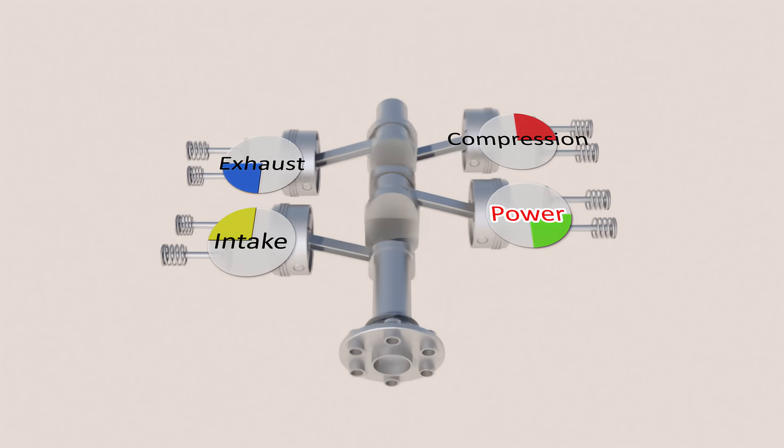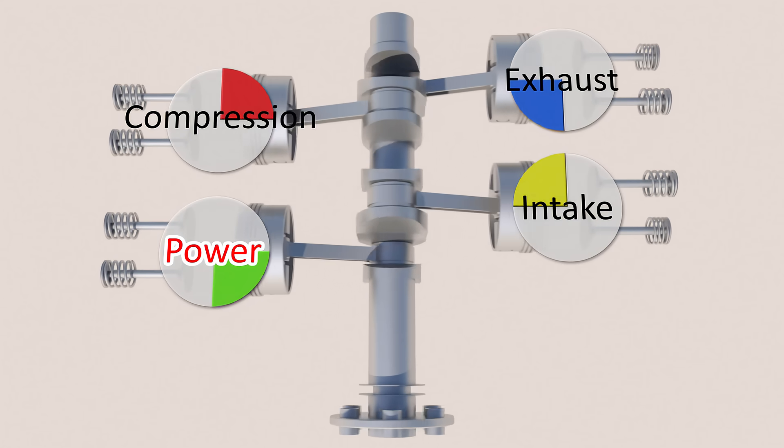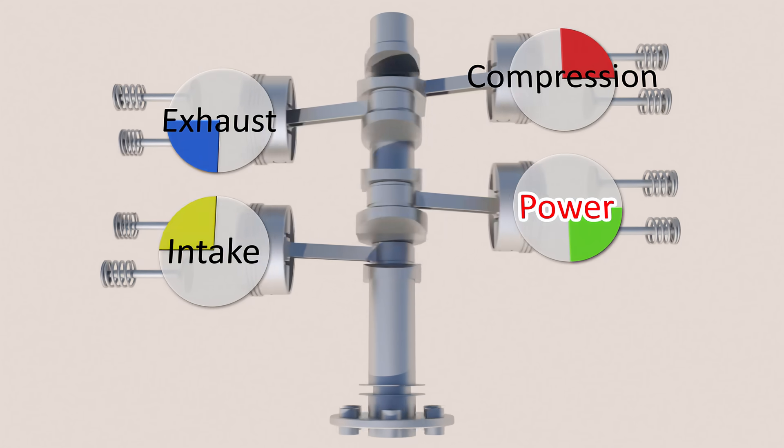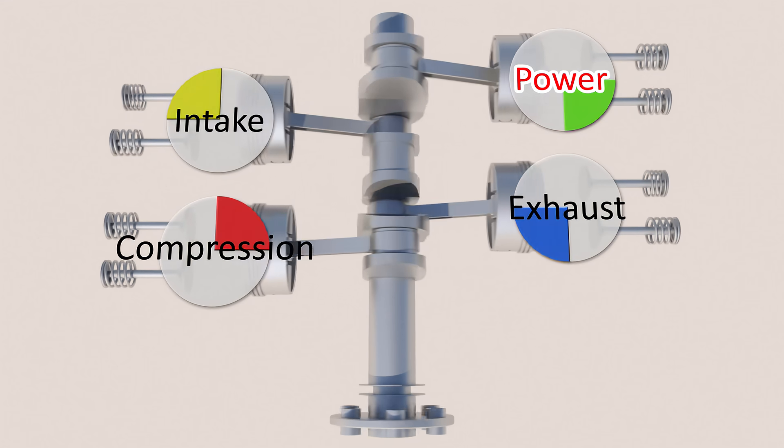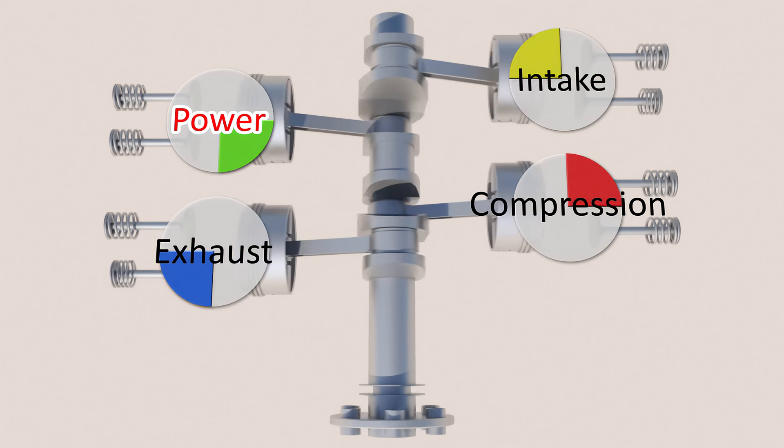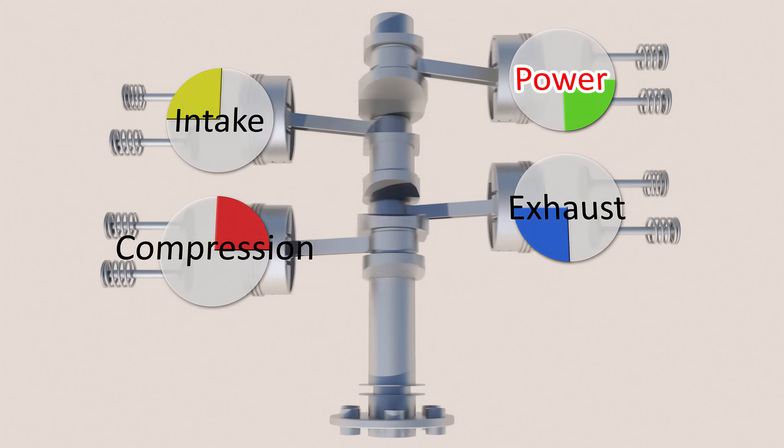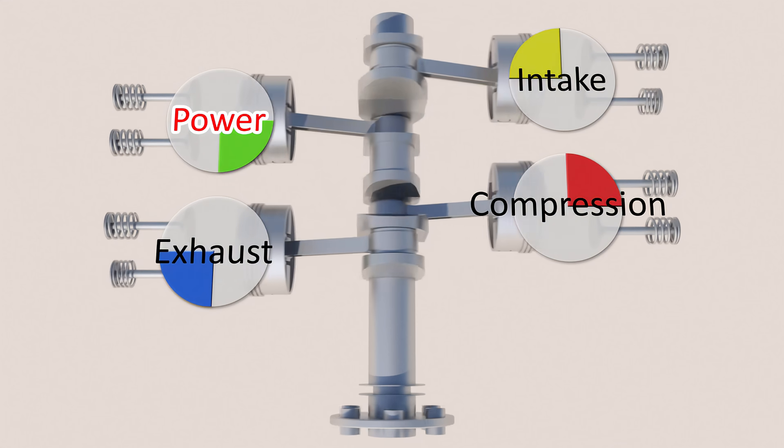On a typical four-cylinder engine, each one of the cylinders is in the middle of a different stroke. That way, one cylinder is always in the power stroke, and the engine is able to keep the crankshaft rotating, thereby allowing the remaining cylinders to go through their respective stroke.